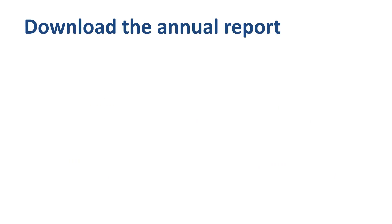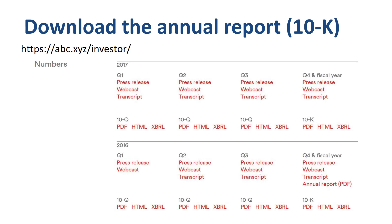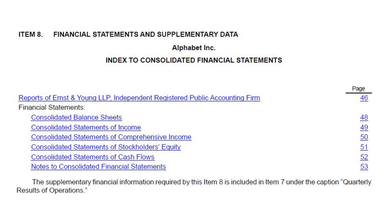In order to analyze an income statement, you need to download the company's annual report. In the case of Alphabet Inc, go to abc.xyz/investor, go to the column with the full year numbers, and download the 10-K PDF version. This document is 105 pages long. Scroll down the table of contents to Item 8, Financial Statements and Supplementary Data, and click on the link. You'll arrive at the index to the financial statements and related notes.